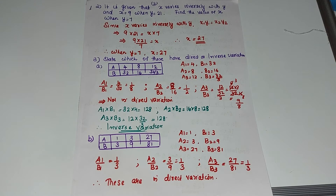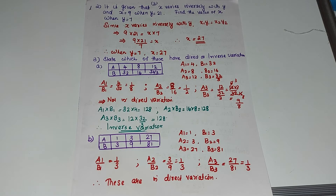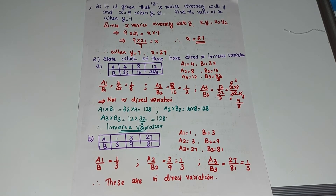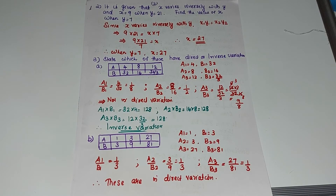Question 2: It is given that x varies inversely with y, and x=9 when y=21. Find the value of x when y=7. Since they vary inversely, x1·y1 = x2·y2, so 9×21 = x×7, which gives x = 9×21/7 = 27. So when y=7, x=27.